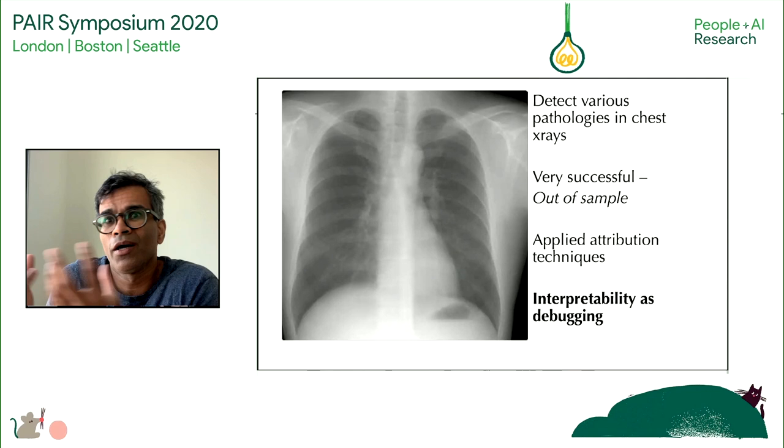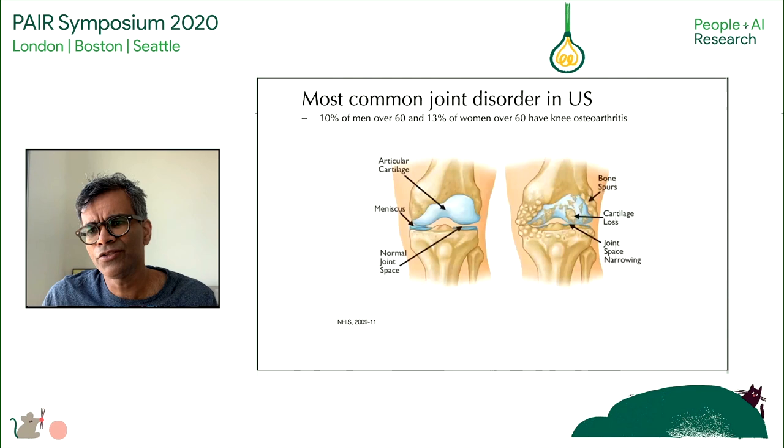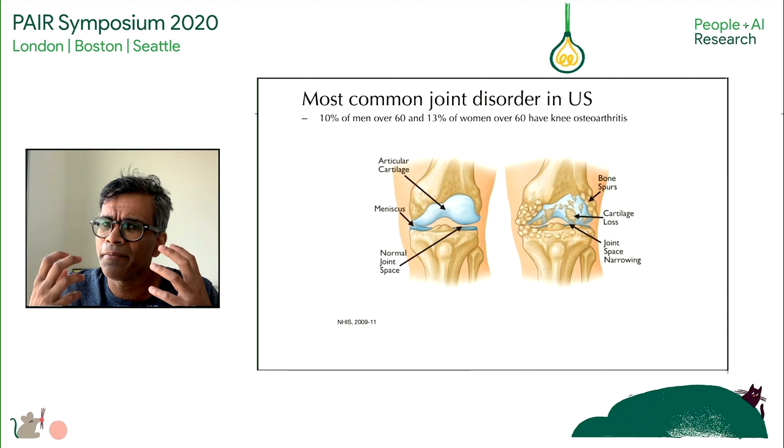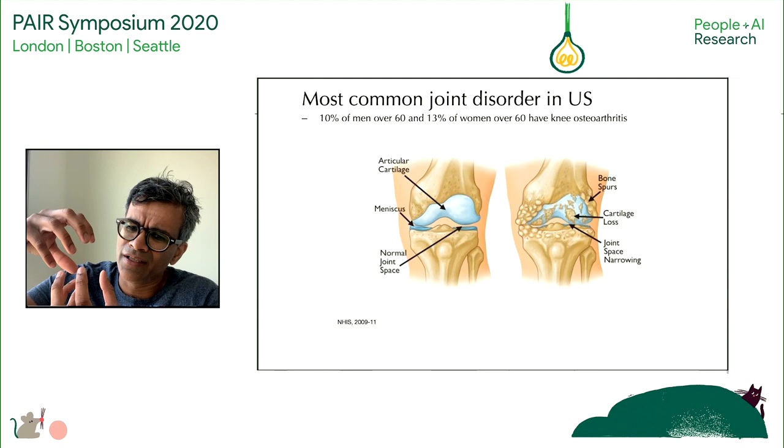Story two also involves X-rays, but this time it's about osteoarthritis. Osteoarthritis is a very painful degenerative condition. In this case, we're focusing on the knee — the space between the bones where the cartilage in the meniscus is worn down. It's painful whenever you walk or move, and many people have this chronic condition. The big consequence is pain.